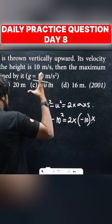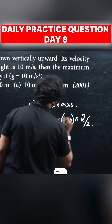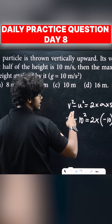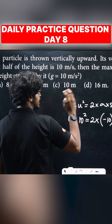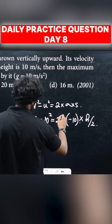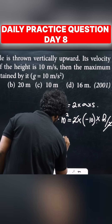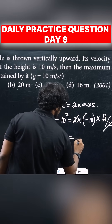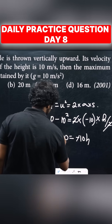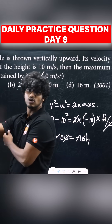So it's negative here — minus 10, and the 2 and g cancel, giving minus 100 equals minus 10h. The negatives cancel, and h equals 10 meters is the answer.